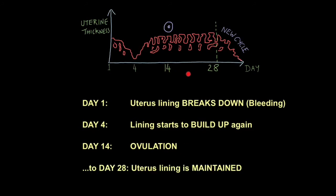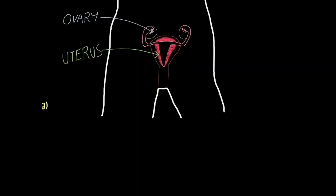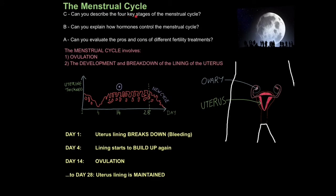Between days 14 and 28, the uterus lining thickness is maintained. The point of the menstrual cycle is to prepare the female's body for pregnancy, but also to save energy in case reproduction opportunities do not arise. The egg starts in the ovary, travels down the fallopian tube where fertilization with sperm occurs, and then the fertilized egg implants onto the uterine lining, which has blood vessels to supply it with nutrients.